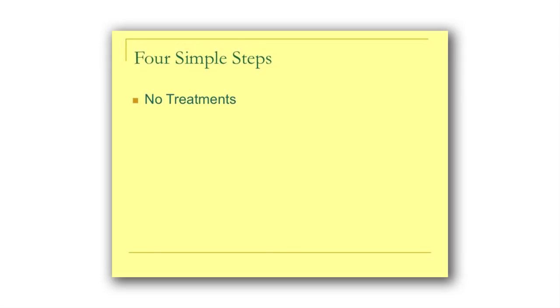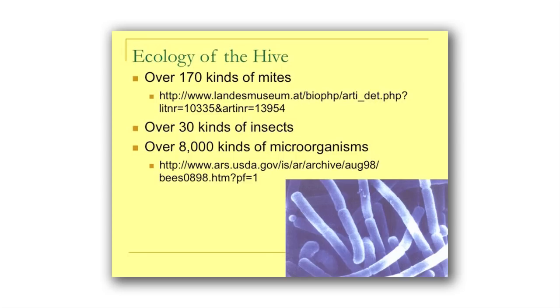The number one step for healthier bees is to not treat them. One of the reasons is there are 170 kinds of mites that live on bees. There's only three that are a problem, and only two of those are in North America. So whenever you manage to kill the varroa mites, you manage to kill all these other mites — some of which, like pseudoscorpions, we know for a fact eat varroa. When varroa showed up, they tried to kill every last mite in the hive, and they've pretty much accomplished that with all mites except the varroa.